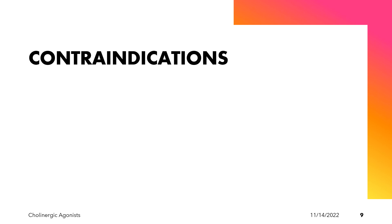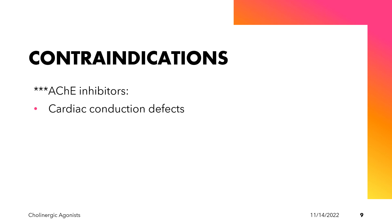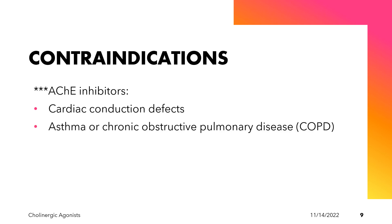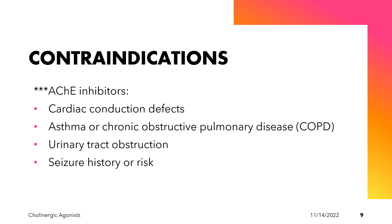For the contraindications — a contraindication is a specific situation in which a drug should not be used because it may be harmful to the patient. The contraindications of the acetylcholinesterase inhibitors include the presence of cardioconduction defects, asthma or COPD, urinary tract obstruction, seizure history or risk, and the presence of GI bleeding history or risk.